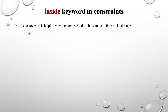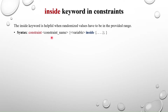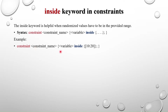Let's start with the keyword 'inside'. The inside keyword is helpful when randomized values have to be within a provided range. We can specify the range so that values are generated within it. The syntax is: constraint [constraint_name] { [variable] inside { [range] }; }. There are multiple ways to write the range — we'll go through them one by one.